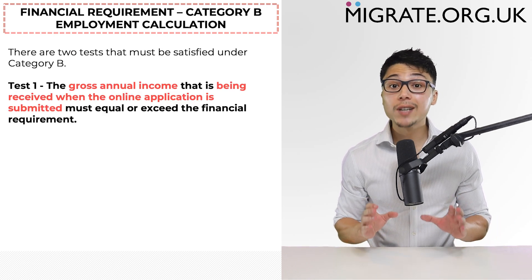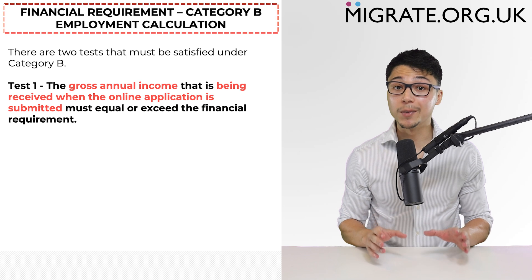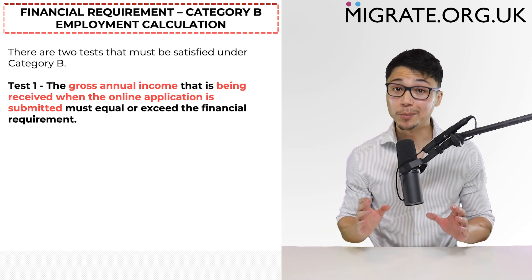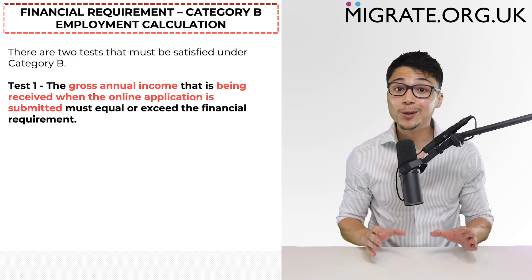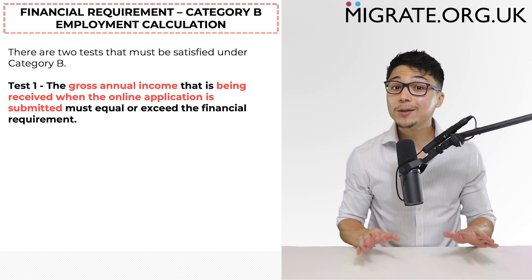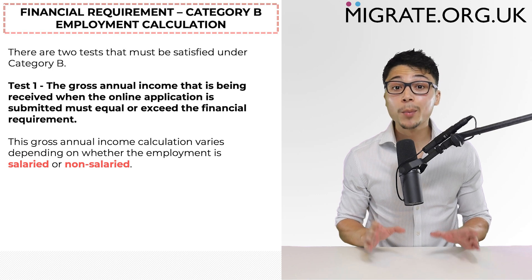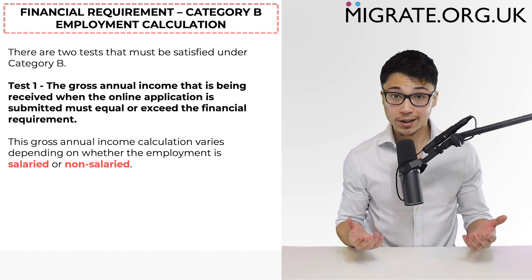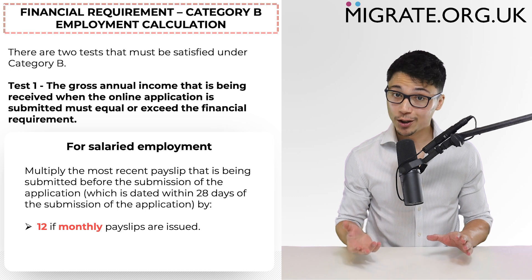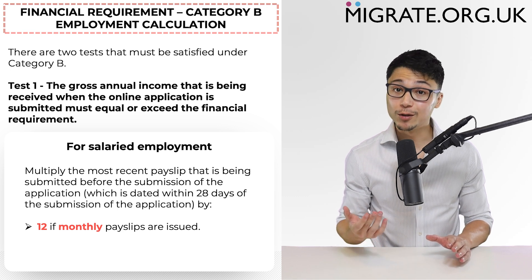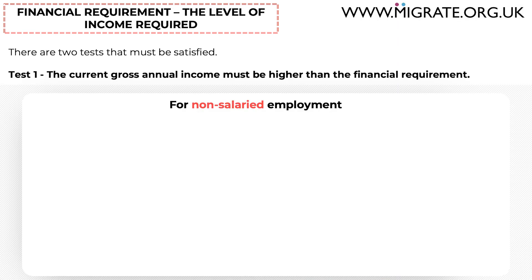The first test is that the gross annual income being received when the application is submitted must equal or exceed the financial requirement that applies — which is £18,600 for most applications, but higher if there are dependent children applying. In the first test, you can only include employment income from current employers; you cannot include employment income from previous employers. The gross annual income calculation varies depending on whether the employment is salaried or non-salaried. If salaried, multiply the most recent payslip that will be submitted prior to submitting the application by 12 if monthly payslips are issued, or by 52 if weekly payslips are issued.